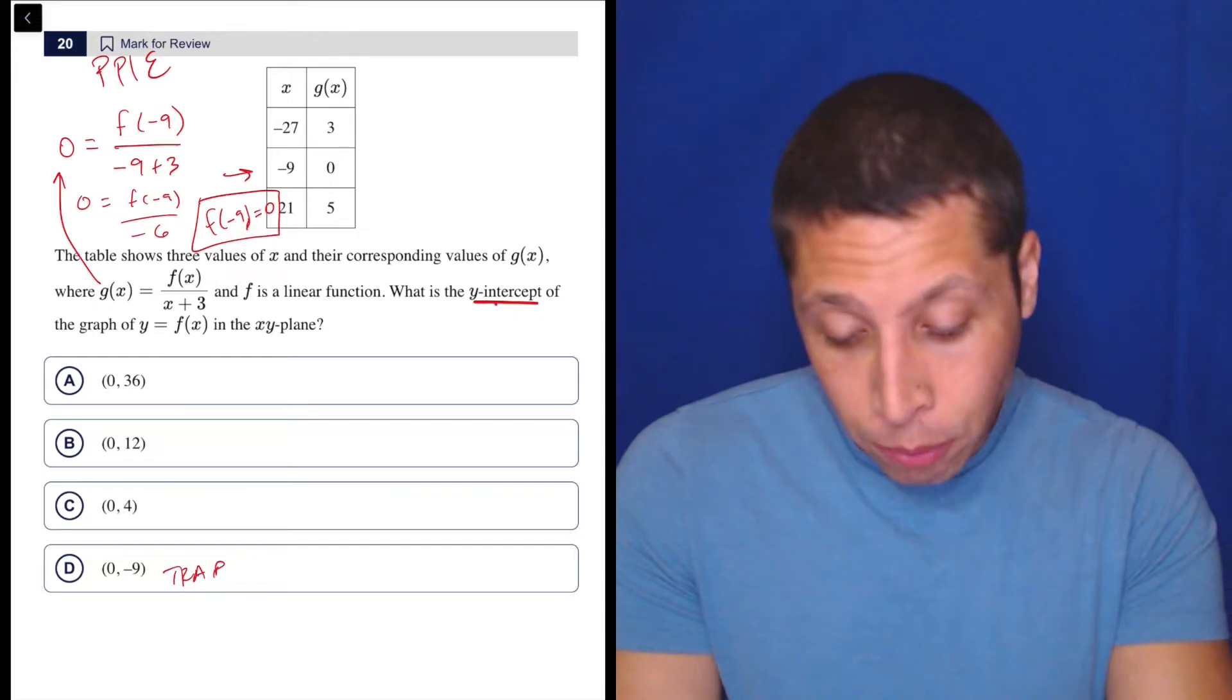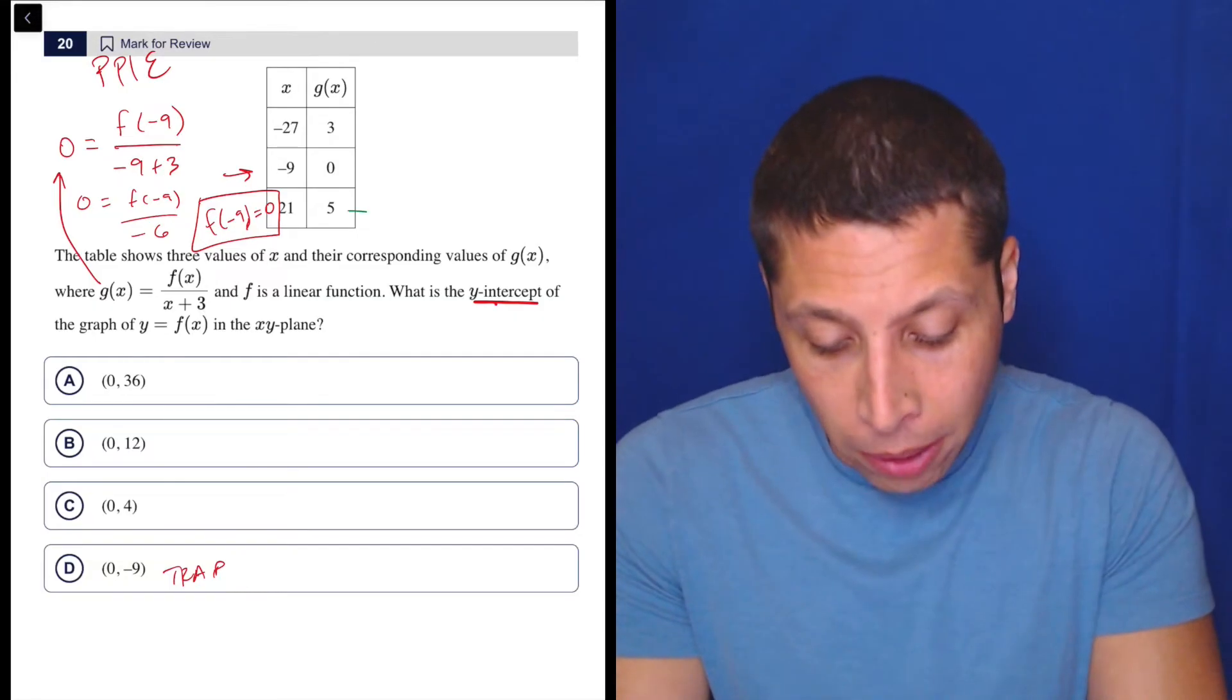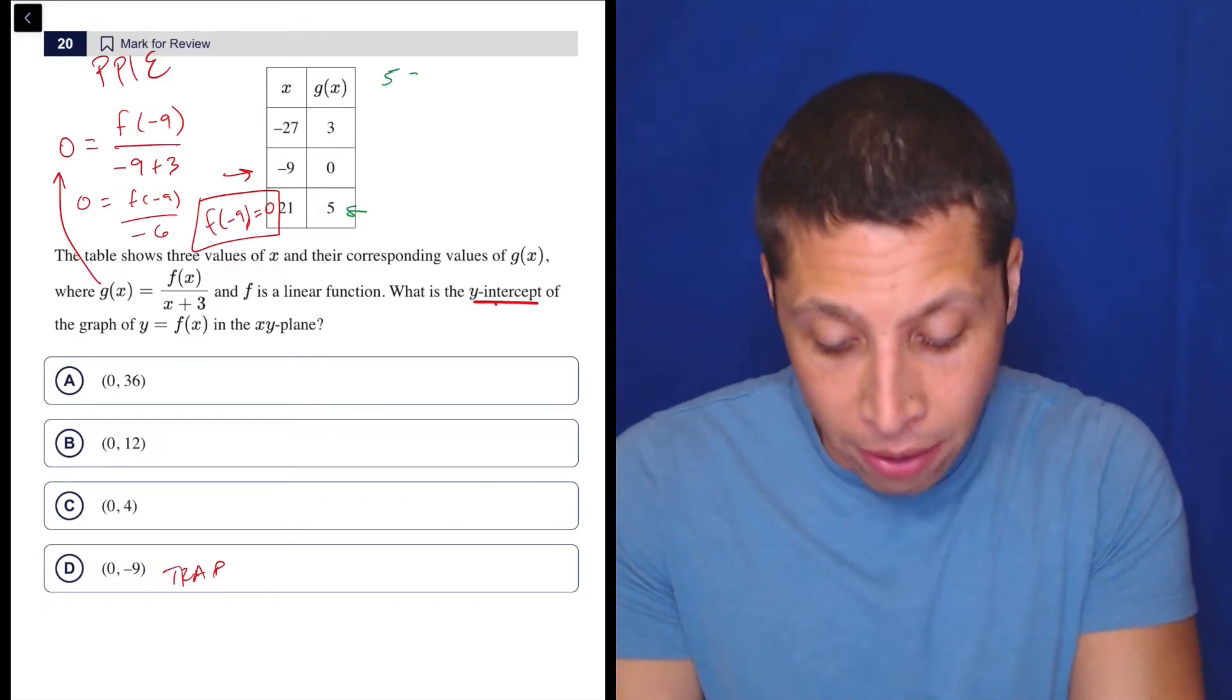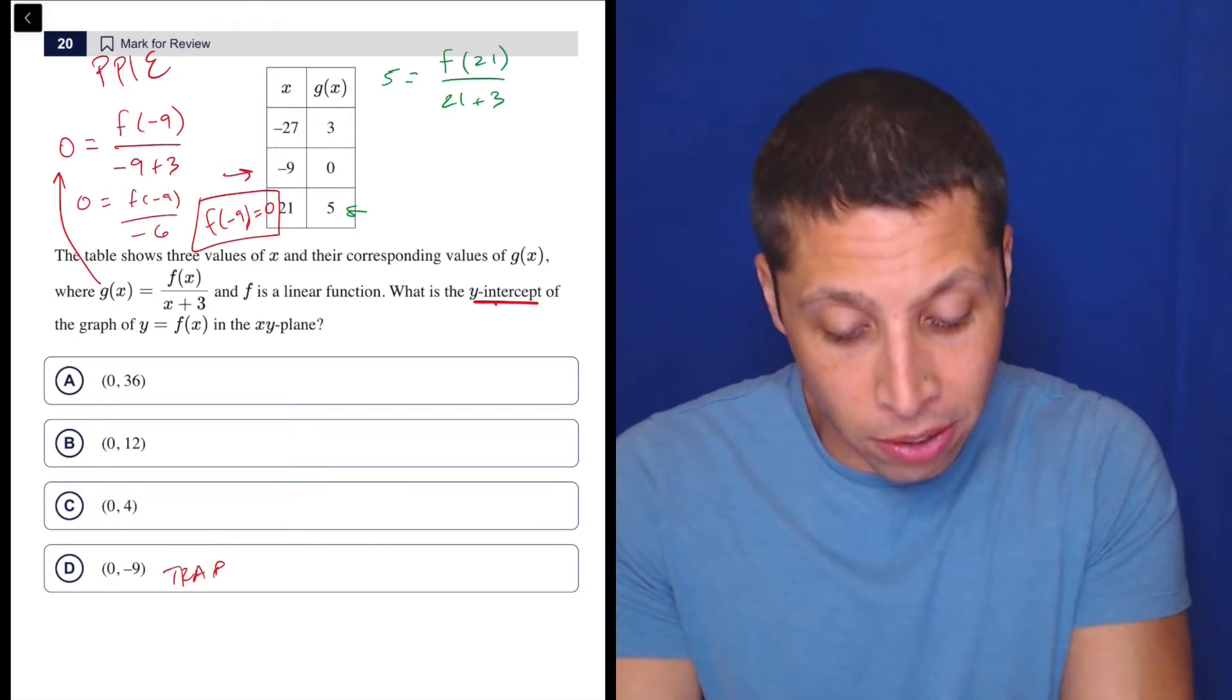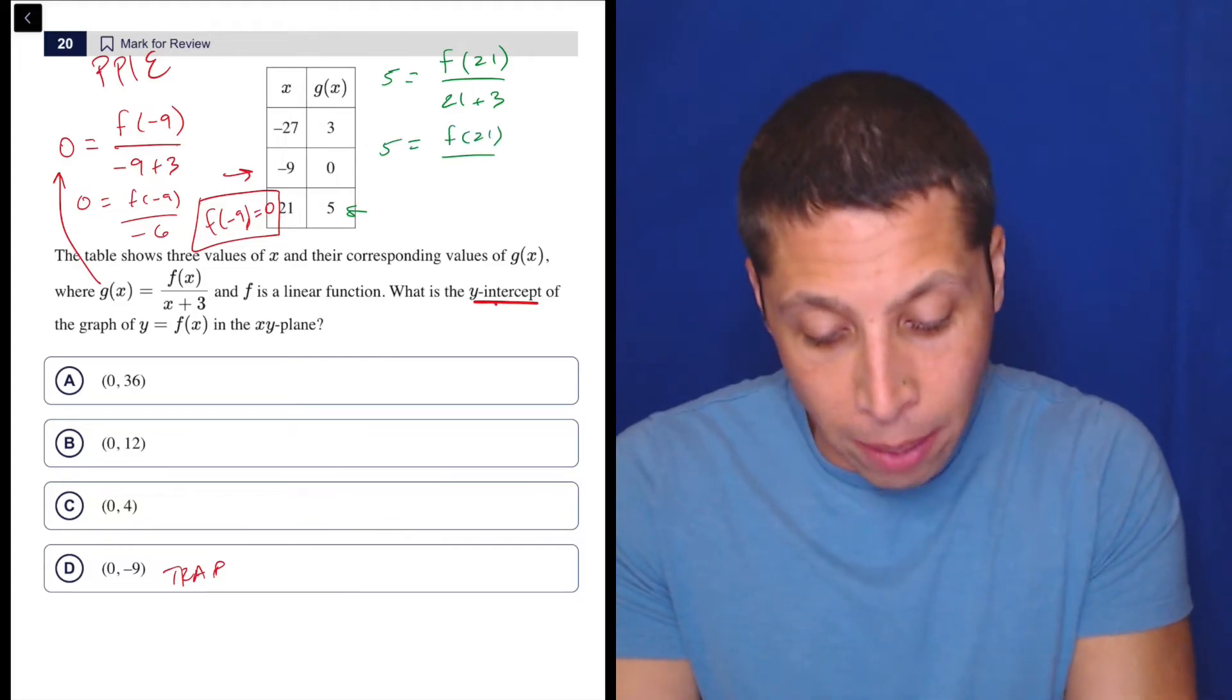I don't have an f equation, so I can't really use it. But let's plug another point into the equation. Why not, because I got nothing better to do. So now I'm going to plug in this point here. So the five is my g of x, so five is equal to, and my x is 21, f of 21 over 21 plus three. So five is equal to f of 21 divided by 24.